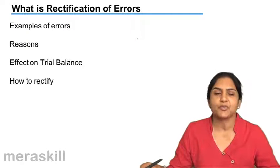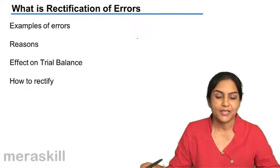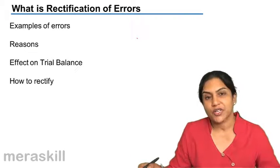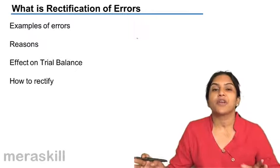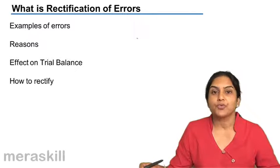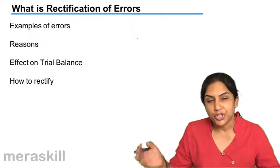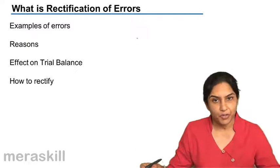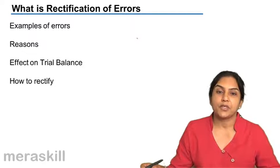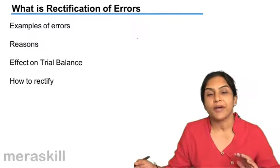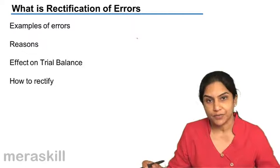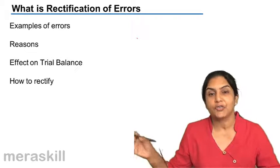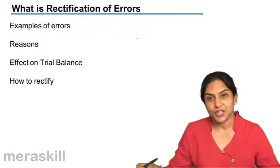What are the examples of errors? Let us see. It is quite possible that we leave out an invoice - there is a purchase invoice we have not recorded it at all. That would be an omission of a purchase transaction entirely from the books. It is again possible a purchase invoice, we go and record in the sales day book. Purchase invoice, instead of recording it in the purchase journal, we go and put it in the sales journal.